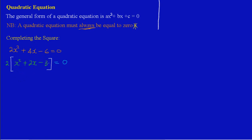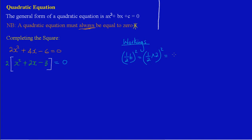Now inside the square brackets the coefficient of x squared is 1, so I can go ahead and complete the square. My B value is 2, so I'm taking half of B and squaring it. Half of 2, all squared, equals 1 squared, which equals 1.